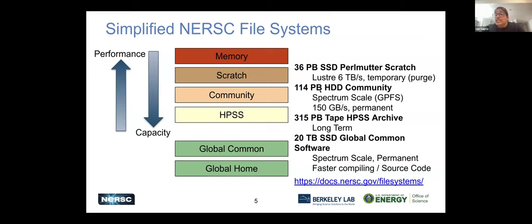One place you could move data is to our community file system. The community file system is very large and it's not as fast, which is why we don't recommend running from it — though you can, and you may not even notice a difference. It's our kind of second-best option. It's semi-permanent: you have access because you're on a project, but if the project doesn't get renewed each year, or if you're removed from a project, you may lose access to that data. When projects don't turn over for the next year, we tell PIs to remove their data so they retain access.